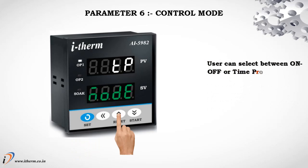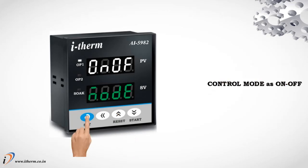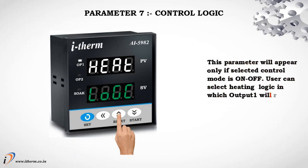Parameter 6: Control Mode. The user can select between on/off or time proportional action algorithm to be adopted for output. Parameter 7: Control Logic. This parameter will appear only if the selected control mode is on/off. The user can select heating logic, in which output 1 will remain on till the process value is less than the set point.